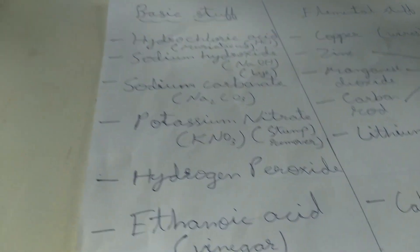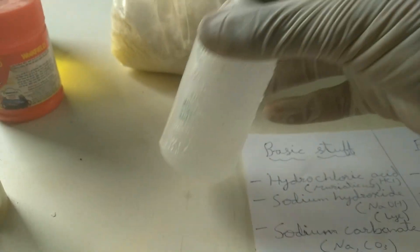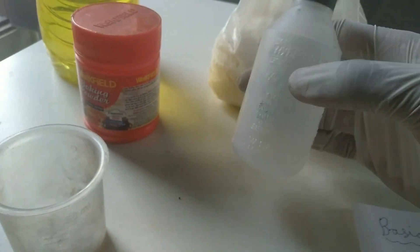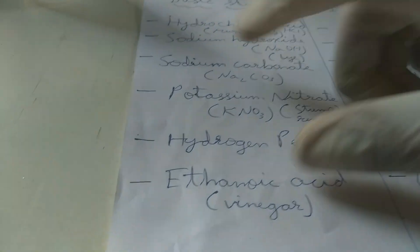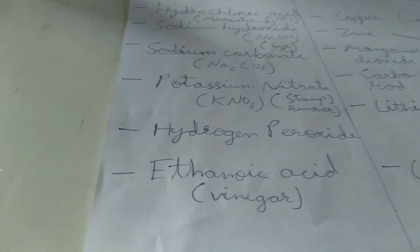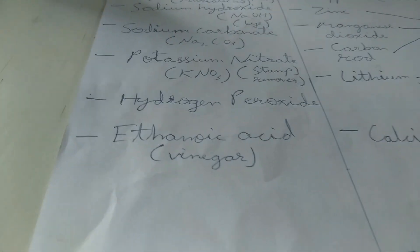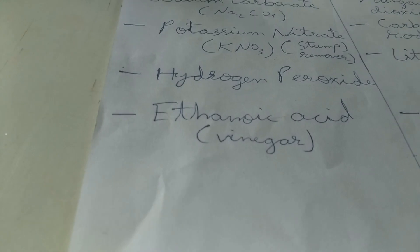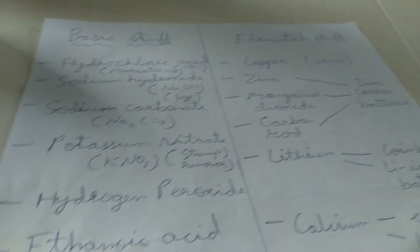The fifth one is hydrogen peroxide, which is easily available in medical stores and general stores too. It's pretty easy to find. And then there's vinegar — it is called ethanoic acid or acetic acid. All these names refer to a single liquid which is often available in your home as vinegar, used in cooking and all that. So as we are done with the basic stuff, let's move to some elemental stuff.